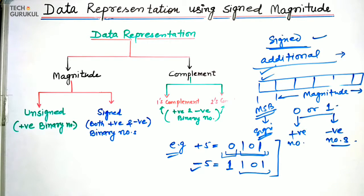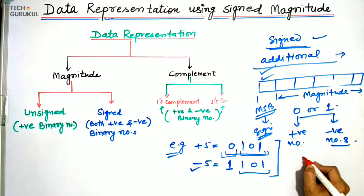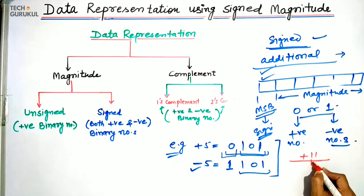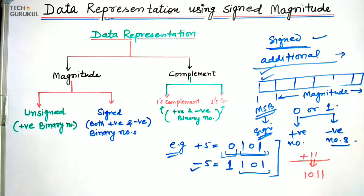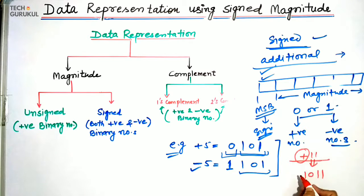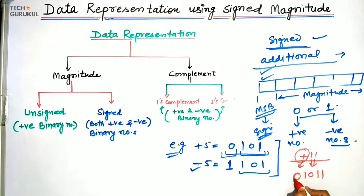For example, if we want to represent plus 11, the binary equivalent of 11 is 1011, and to represent the positive sign we place a 0 here as the MSB.